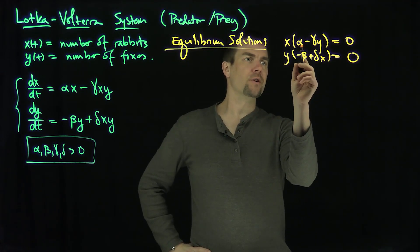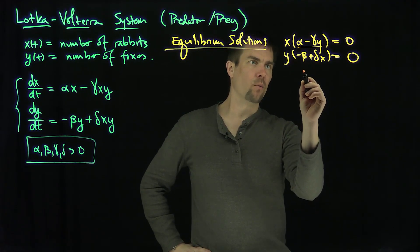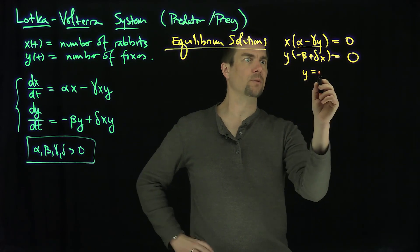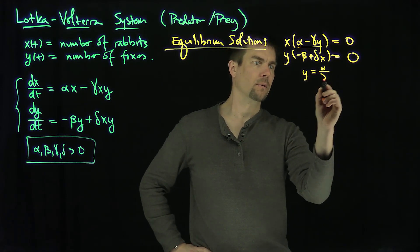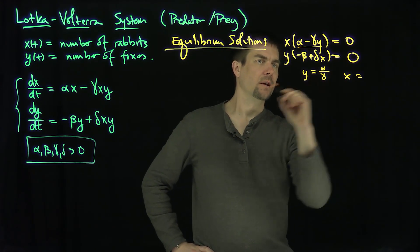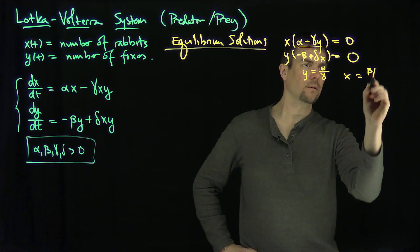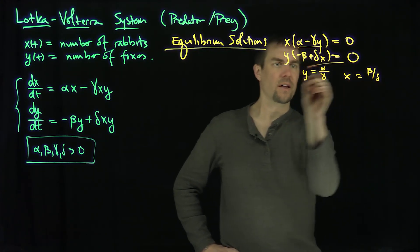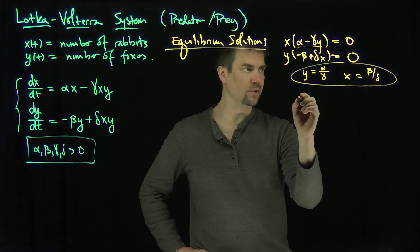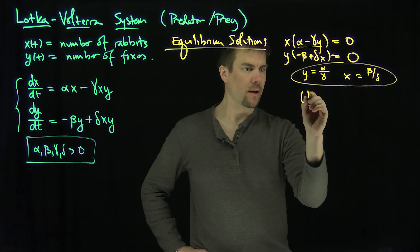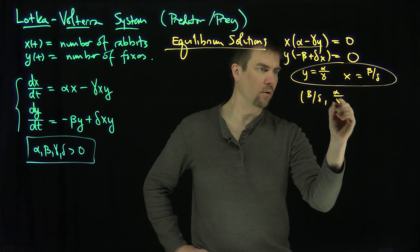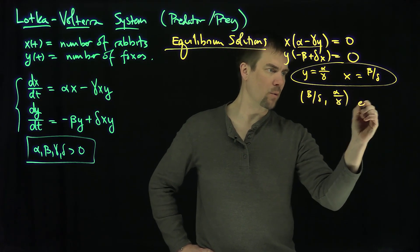The other equilibrium occurs when the other factors equal zero. If y equals alpha over gamma and x equals beta over delta, then that point is an equilibrium solution. So the equilibrium solution is (beta/delta, alpha/gamma).